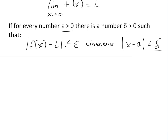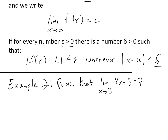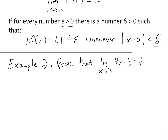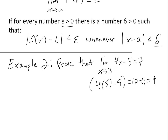Now we're going to go over example two. Example two states: prove that the limit as x approaches three of 4x minus 5 is equal to seven. Well, if you just plug this in, you get four times three minus five, which is twelve minus five, which equals seven. So plugging it in shows it's seven, but we want to know the limit as x approaches three in a systematic way of proving this.